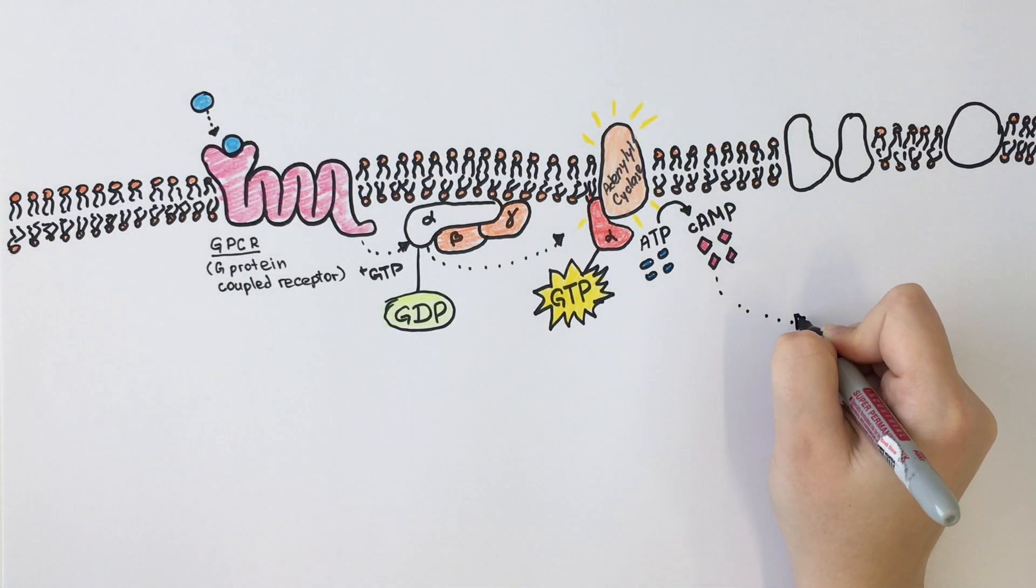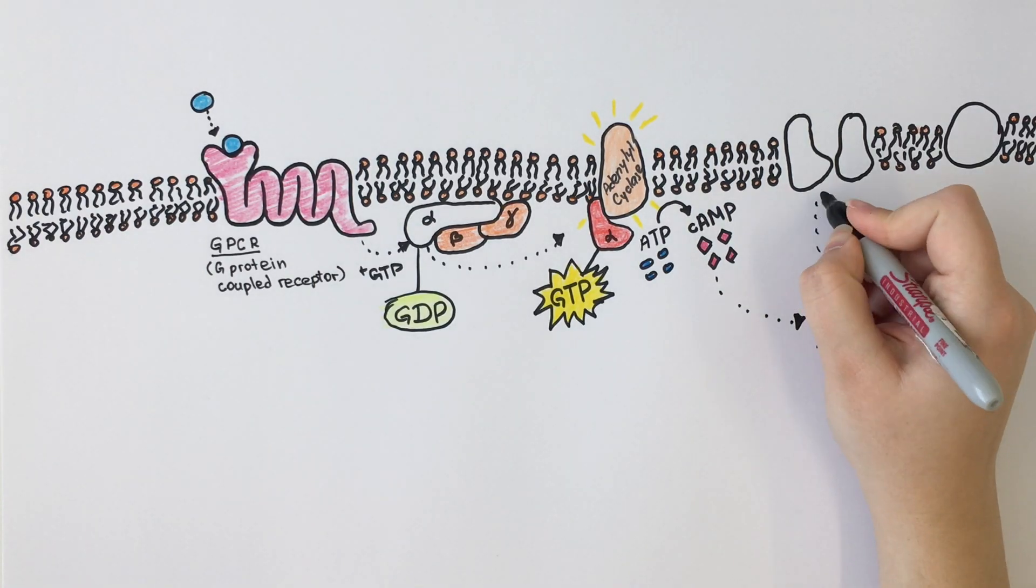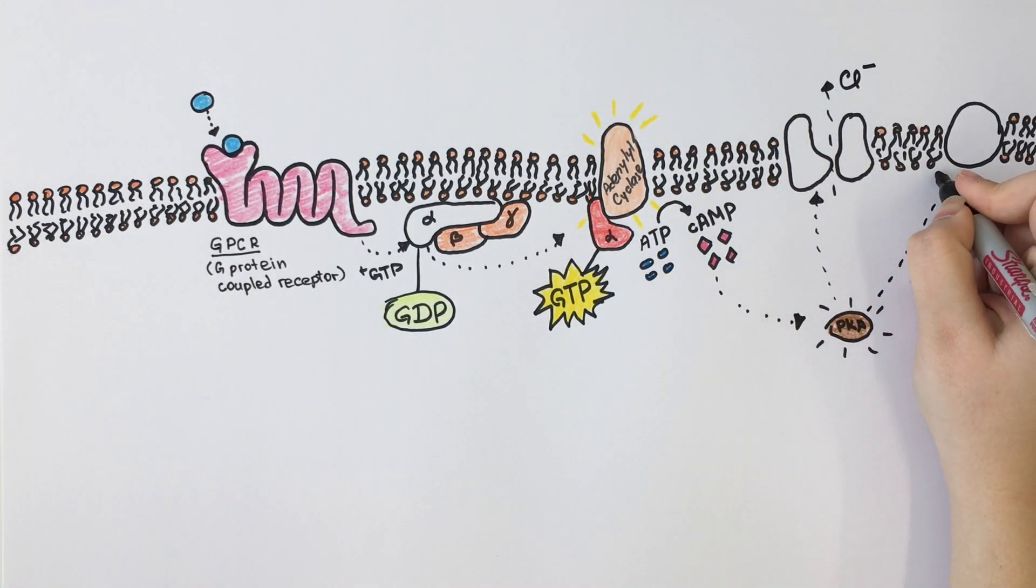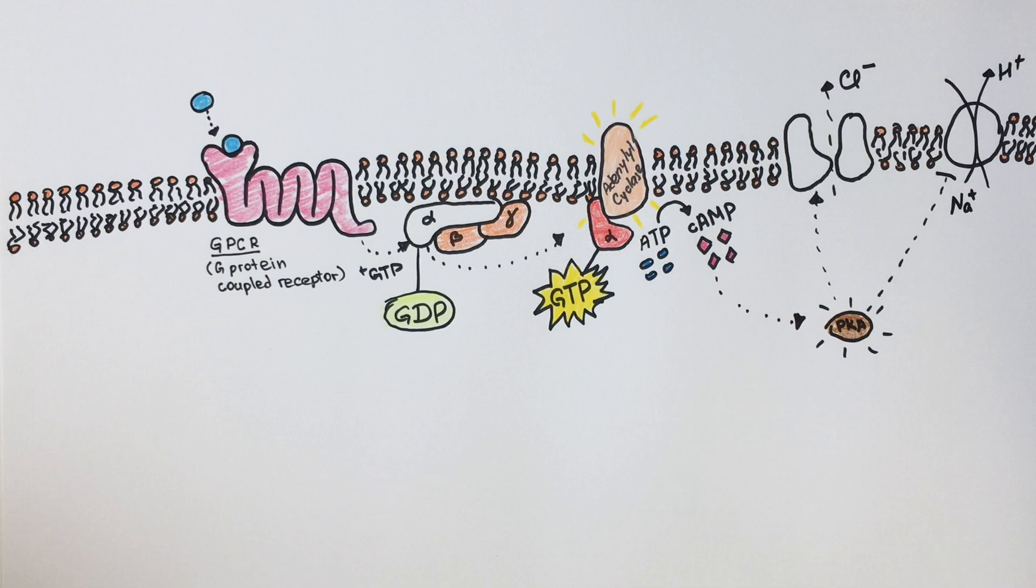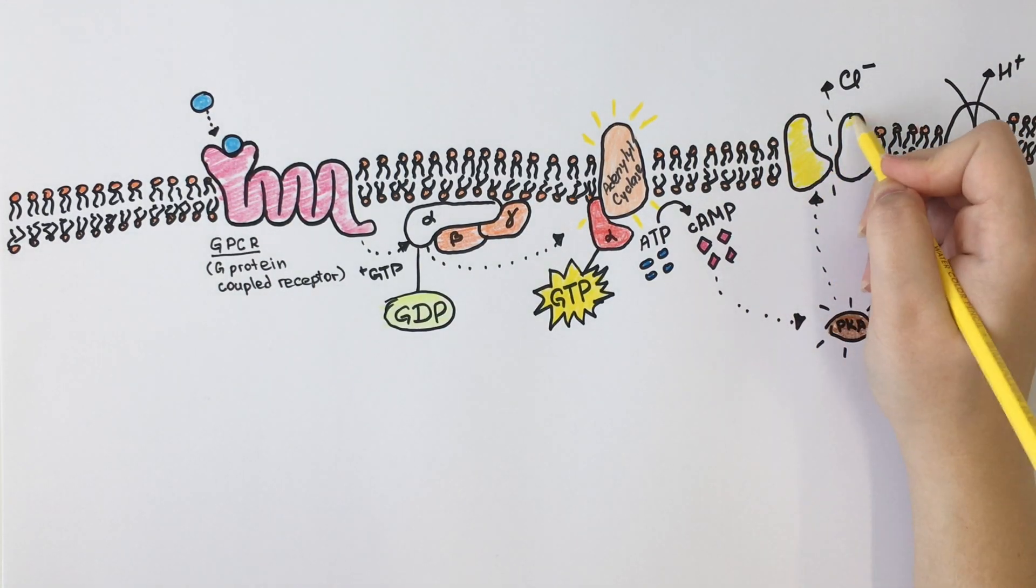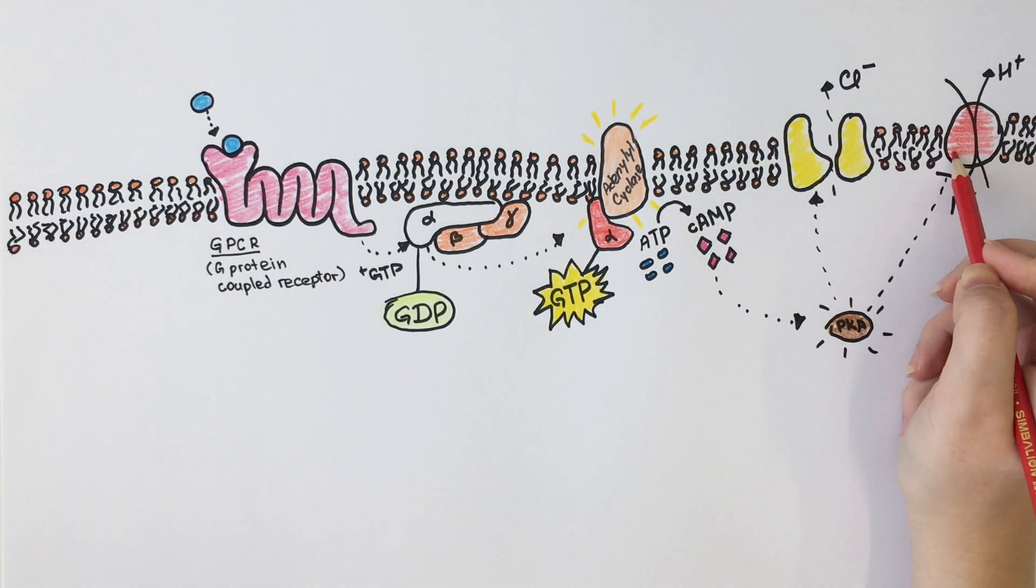The production of cyclic AMP activates PKA, which then induces numerous cellular responses, including the opening of chloride channels to drive the chloride ions out of the cell, and the activation of the sodium-hydrogen antiporters to prevent sodium uptake.